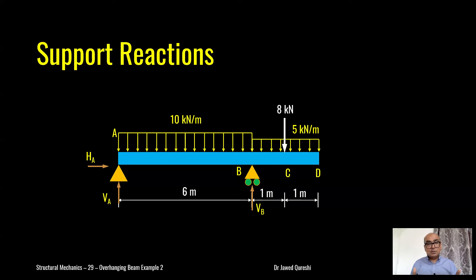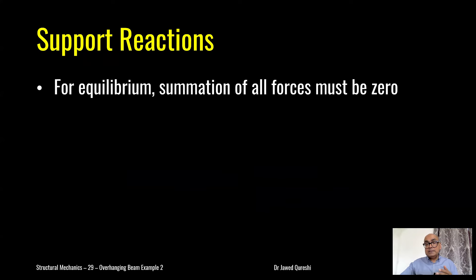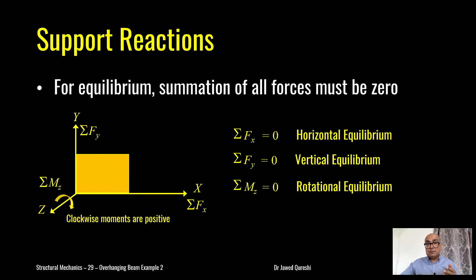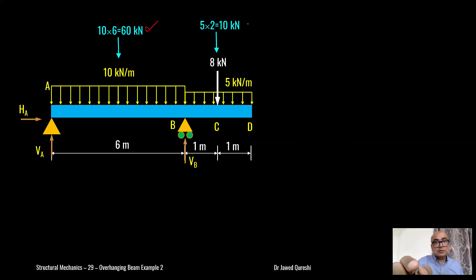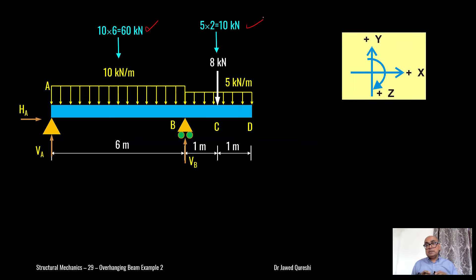As there is no horizontal load applied, the horizontal reaction is going to be zero. For finding reactions I will use three equilibrium equations: summation of horizontal forces = 0, summation of vertical forces = 0, and summation of moment = 0. But first we find the total load for each UDL: 10 × 6 = 60 kilonewtons on the left, and 5 × 2 = 10 kilonewtons on the right.